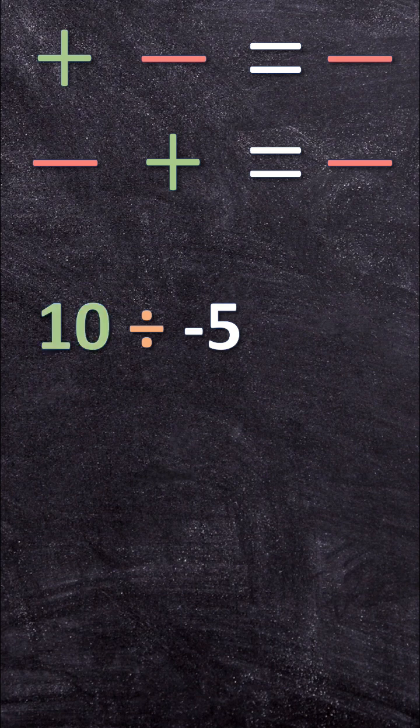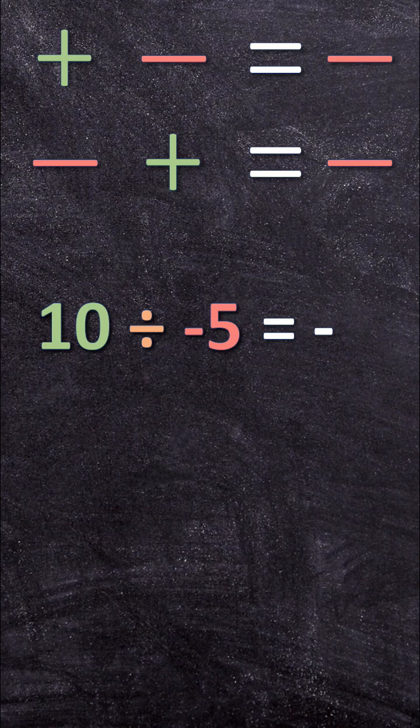For this example, we have a positive divided by a negative. This answer is also going to be negative. And 10 divided by 5 is 2.